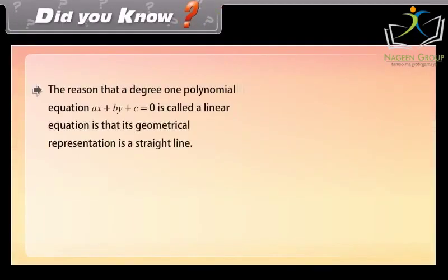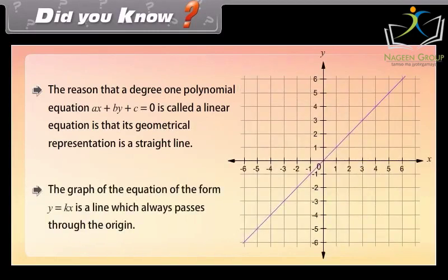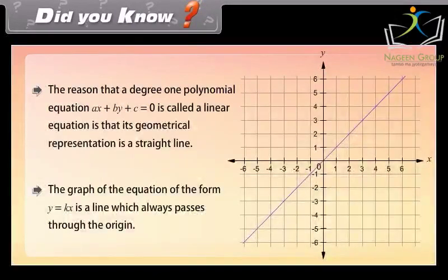Did you know? The reason that a degree-1 polynomial equation AX plus BY plus C equals 0 is called a linear equation is that its geometrical representation is a straight line. The graph of an equation of the form Y equals KX is a line which always passes through the origin.